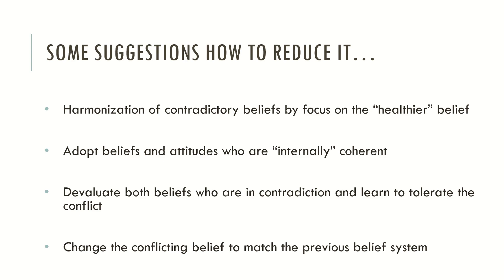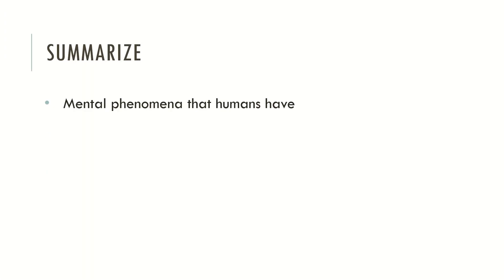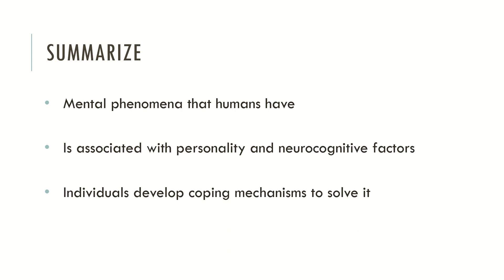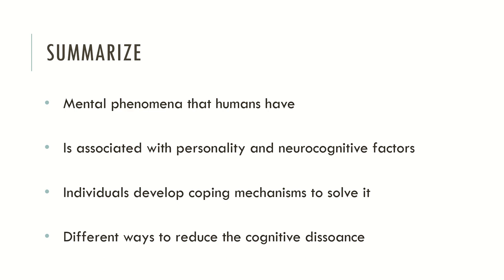And now let's summarize the contents of today. We saw that cognitive dissonance is a mental phenomenon that humans tend to experience when they find contradictory or oppositional beliefs. It is typically associated with personality and neurocognitive factors. Individuals tend to develop coping mechanisms and mental defenses to deal with the discomfort that stems from this dissonance. And there are different ways to reduce cognitive dissonance — some are easy and some are more difficult.